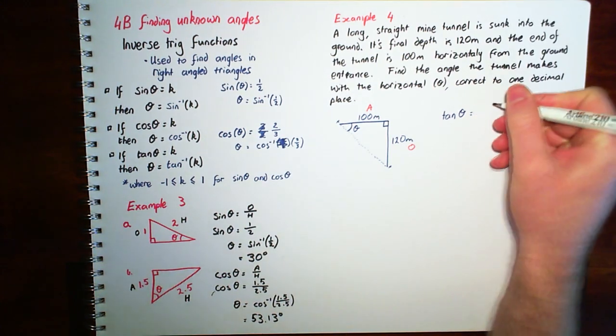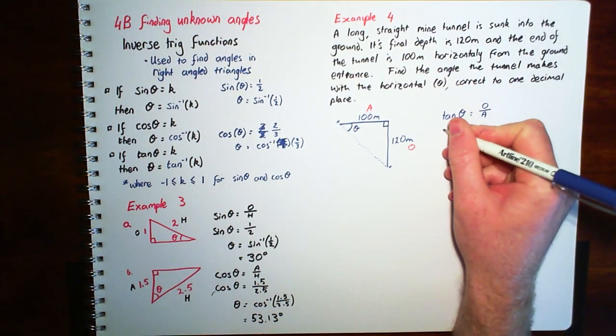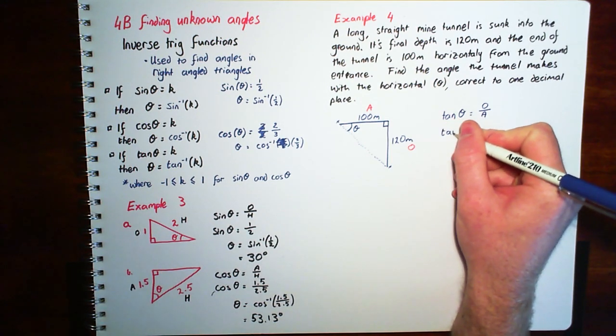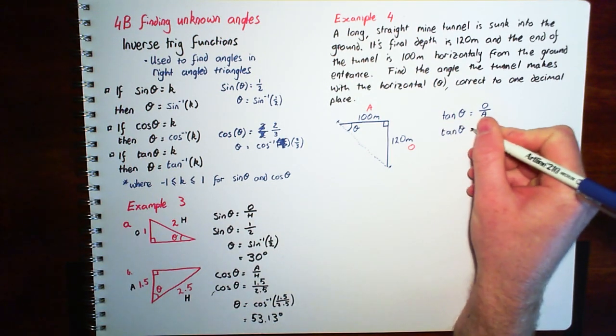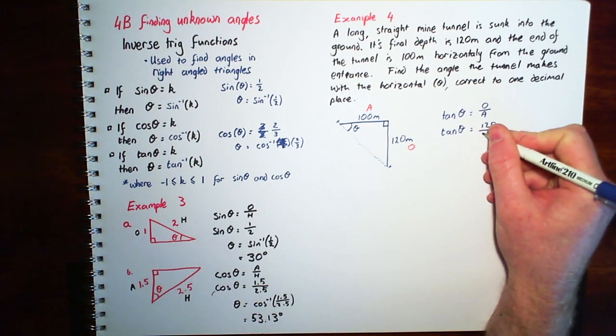So tan theta equals O over A. We're looking for theta. So we leave it as tan theta. 120 over 100.